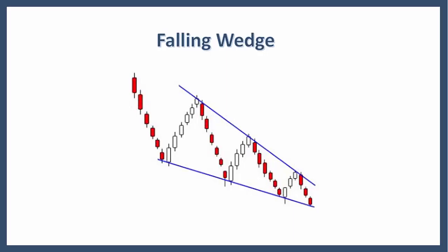The falling wedge can also fit into the continuation category. As a continuation pattern, the falling wedge will still slope down, but the slope will be against the prevailing uptrend.